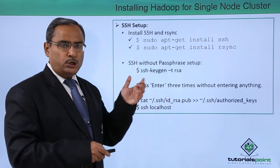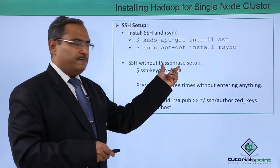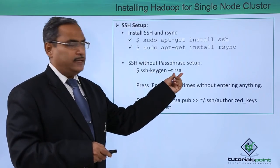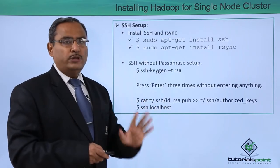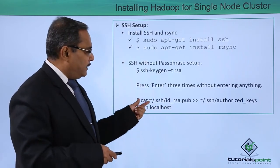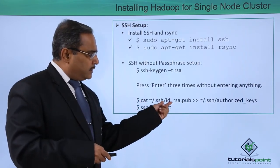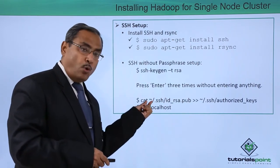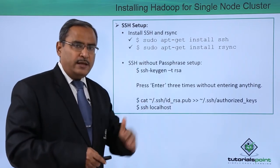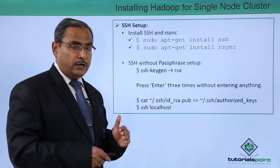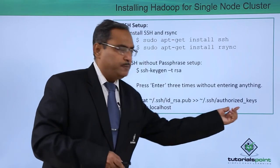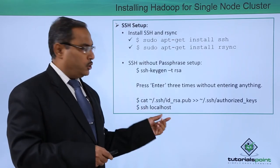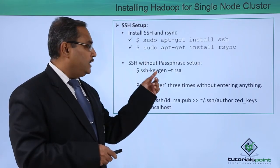For SSH without passphrase setup, the command is: ssh-keygen -t rsa. After that, press Enter three times without entering anything. Then run: cat ~/.ssh/id_rsa.pub and redirect it to the authorized_keys file in the same folder. Then run SSH localhost. These commands are to be executed after pressing Enter three times.